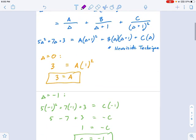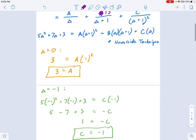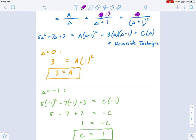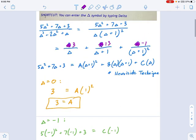At this point, obviously you would put 13 in for B, you would put negative 1 in for C, and you would put 3 in for A. And that is your solution right here. That's the partial decomposition.